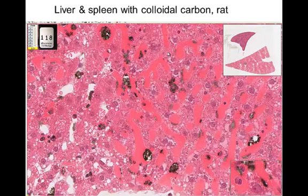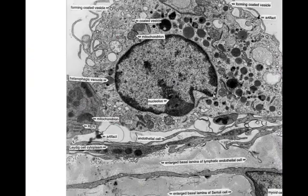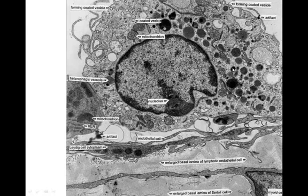If we stain the cells with colloidal carbon, the cells lining these sinusoids are actually phagocytic. These sinusoids have red blood cells inside them, and on the side you can see the Kupfer cells. Kupfer cells are phagocytic cells like macrophages, involved in helping clean the blood. Here we see a macrophage with various stages of digestion. One characteristic of secondary lysosomes is that the granules have different intensities as there are different states of degradation. There are also a lot of plasma membrane projections associated with phagocytosis.